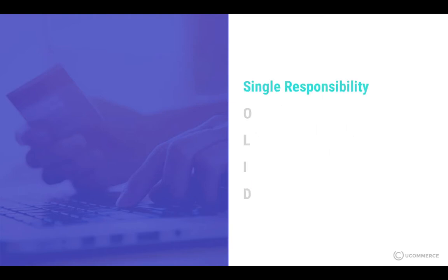The first is the single responsibility principle. The general idea is to have each component have one clear responsibility. Take the tax calculation as an example — if we're doing a tax calculation and then also rounding the result, we're actually breaking the single responsibility principle, because the tax component now has the responsibility of calculating tax and also rounding numbers. To observe the principle we split those two responsibilities into two separate components to deal with tax and with rounding.